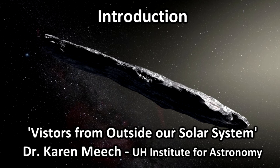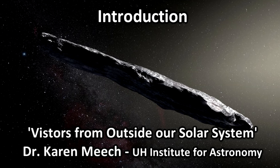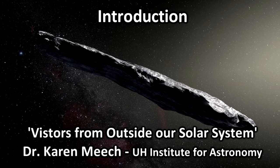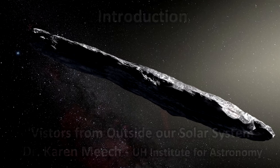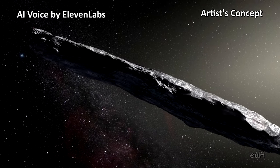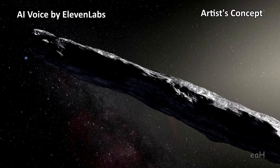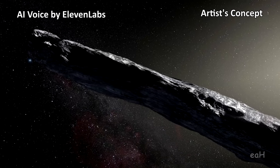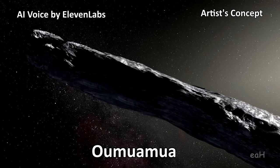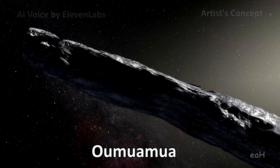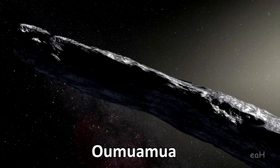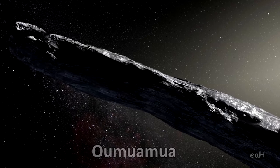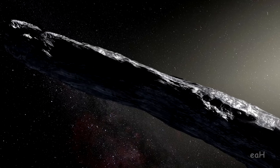Dr. Karen Meech is on the faculty at the University of Hawaii's Institute for Astronomy since 1987. She is a past TED talk presenter where she talked about the historic discovery of the first interstellar object or ISO which passed through our solar system in 2017 and was given the Hawaiian name 'Oumuamua.